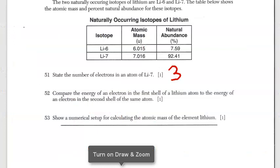In question 52, compare the energy of an electron in the first shell of Lithium to the energy of an electron in the second shell of the same atom. Lithium's electron configuration from the periodic table has two electrons in the first shell closest to the nucleus, and then one electron. The first shell electrons have less energy than the second shell. So second shell has higher energy than the first shell.